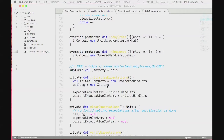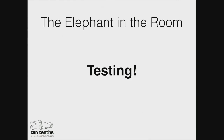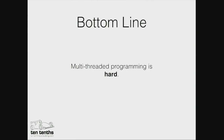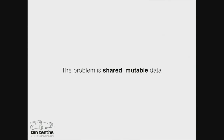So the answer, I believe, is: don't use threads and locks. There is no way that you can get your code correct using threads and locks. The bottom line is multi-threaded programming is really, really hard. Fundamentally, the problem is wherever we've got shared mutable data. So the question becomes: what do we do about this? And this is where we get to the better half of this conversation — the ways in which we can actually address this problem.